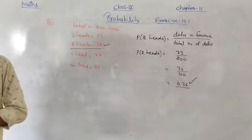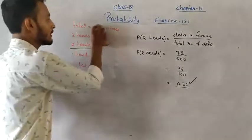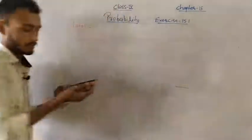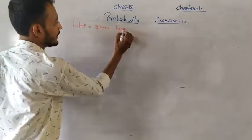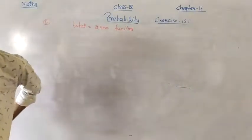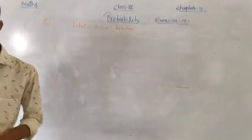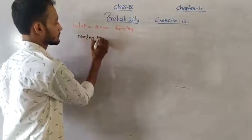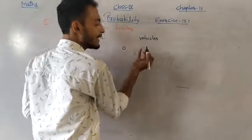Question 5: An organization selected 2400 families. Total families = 2400. A survey was conducted on income level and number of vehicles. A table is given with monthly income categories and number of vehicles (0, 1, 2, or above 2).